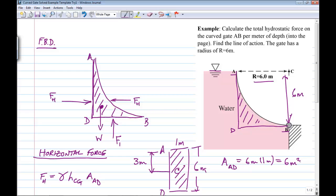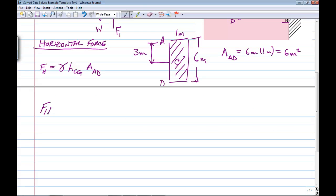Now let me just scroll to the next page to continue with the calculation. So FH equals 9800 newtons per cubic meter for water. The height of the centroid is 3 meters, and we just calculated the area as 6 square meters. And that works out to 176.4 kilonewtons, and of course the hydrostatic force is to the right.